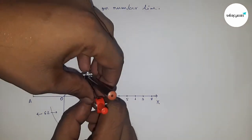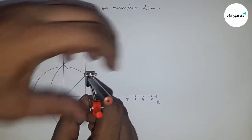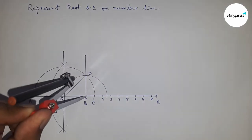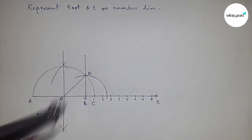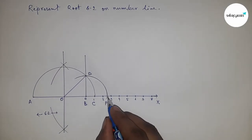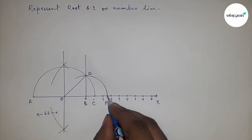Now taking the length BD by compass and having to draw an arc. So drawing an arc and which cut the number line at a point E. So this is E point and this is the representation of root 6.2.